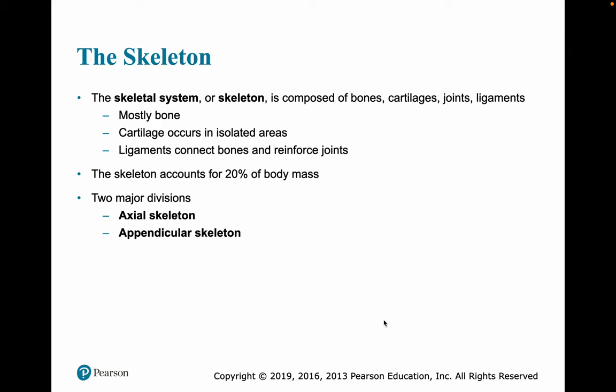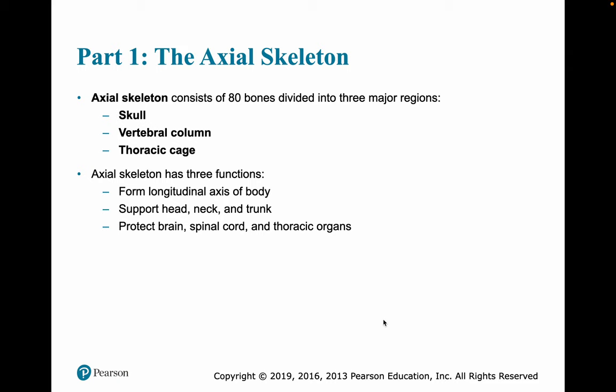The skeleton accounts for about 20% of your body mass, so a 100-pound person would have about 20 pounds of skeleton. We divide the skeleton into two groups of bones. The axial skeleton forms the axis of your body — your skull, thoracic cage, and spinal column. The other is the appendicular skeleton, which includes the appendages and the bones that attach the appendages to the axial skeleton.